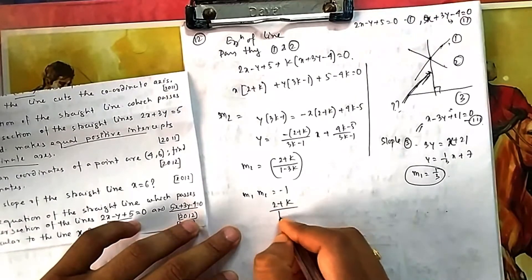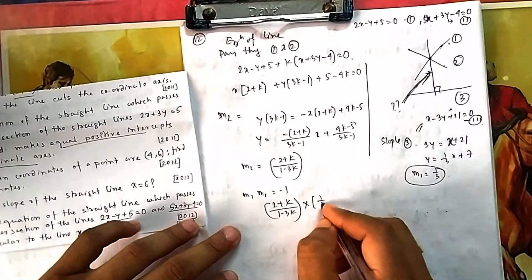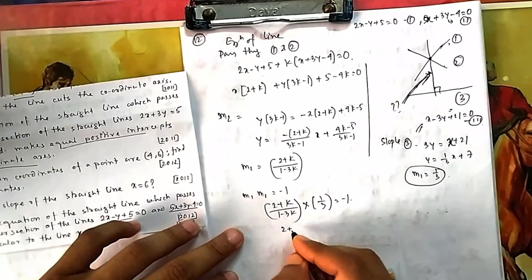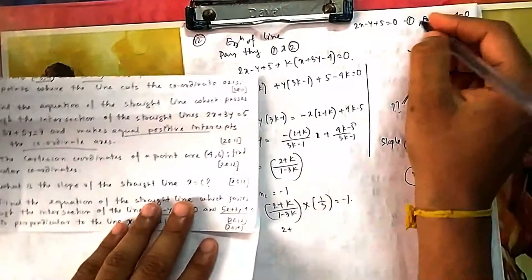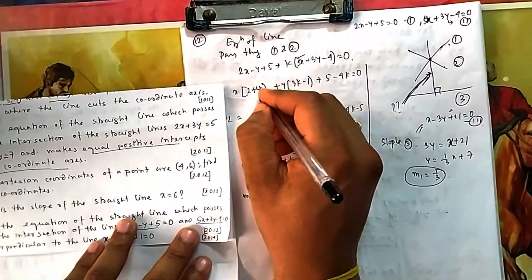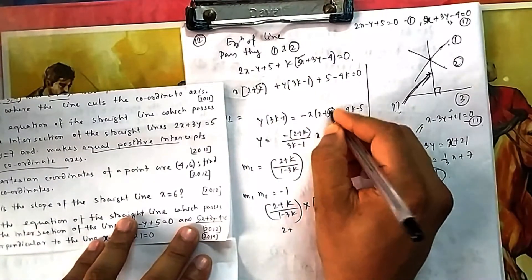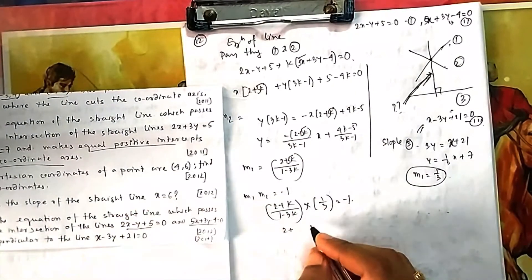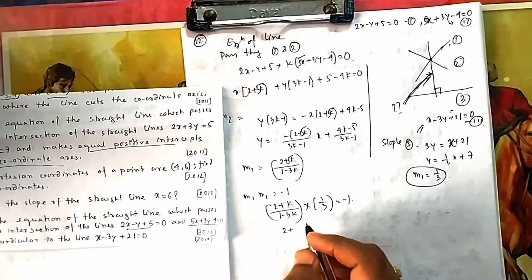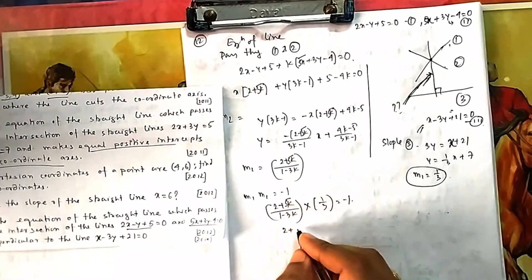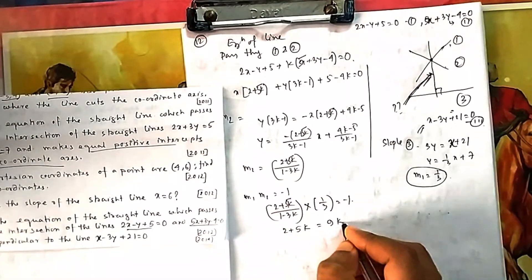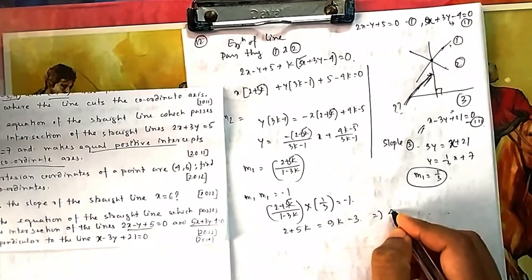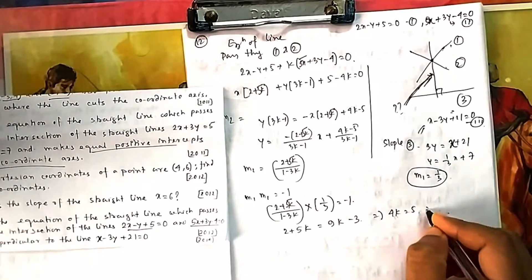Solving the perpendicularity condition: (2 plus k) times (1/3) divided by (1 minus 3k) equals minus 1. Working through the algebra — please kindly verify these calculations — gives 2 plus 5k equals 9k minus 3, leading to 4k equals 5, so k equals 5/4.